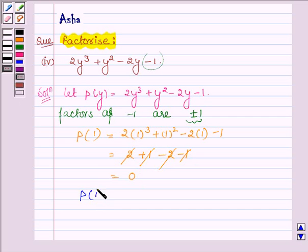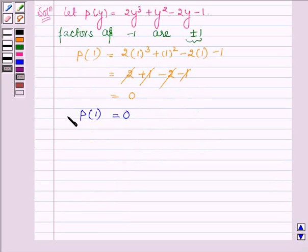So when y is replaced by 1 we get the value of the polynomial as 0. This implies (y-1) is a factor of p(y).